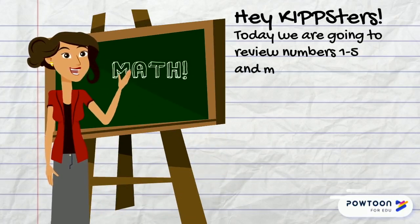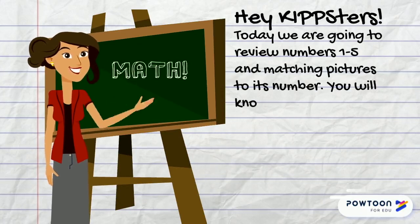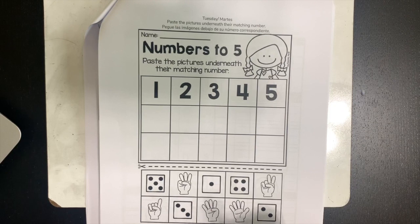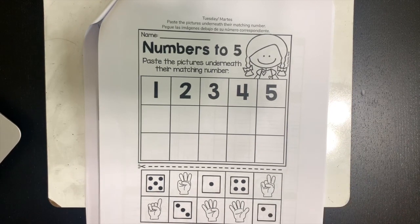Hi Kipsters! Today I want to review numbers 1 through 5 and then also spend some time writing our numbers. You will know you are successful when you can identify and match the pictures to the numbers. So let's begin.